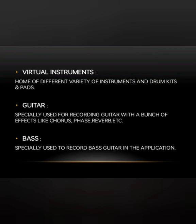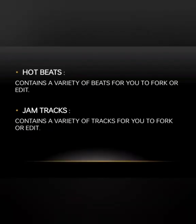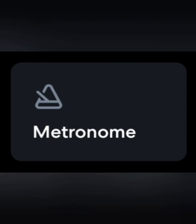Moving on to the Songbook heading, you see Hot Beats and Jam Tracks. These are already created beats and tracks made by different people on the application. You can use them and fork them — if you don't know what fork means, just think of it as using the tracks and editing them.